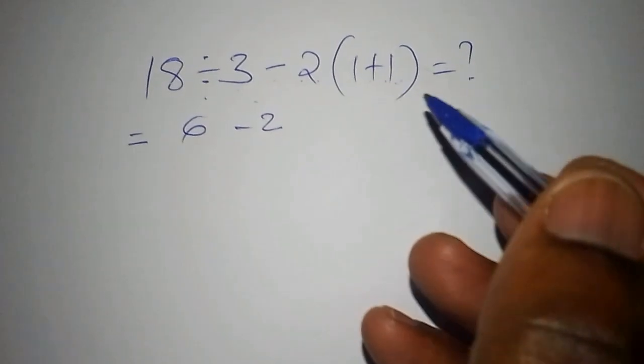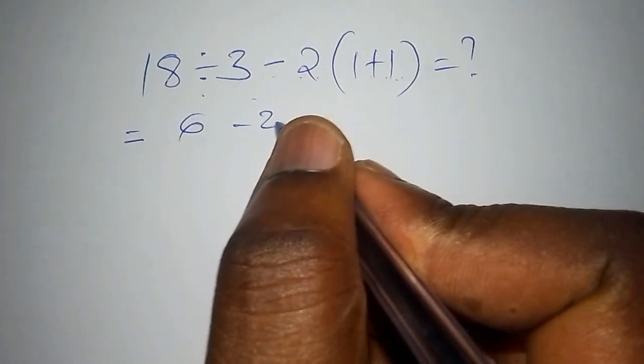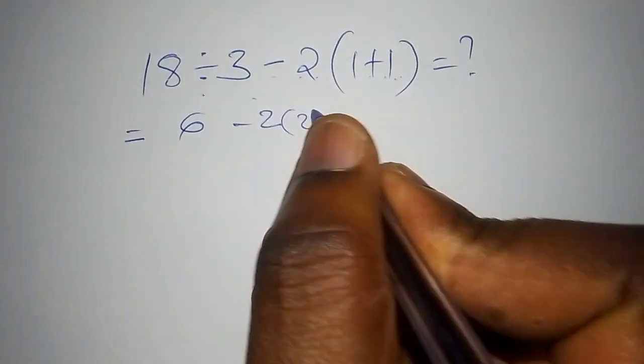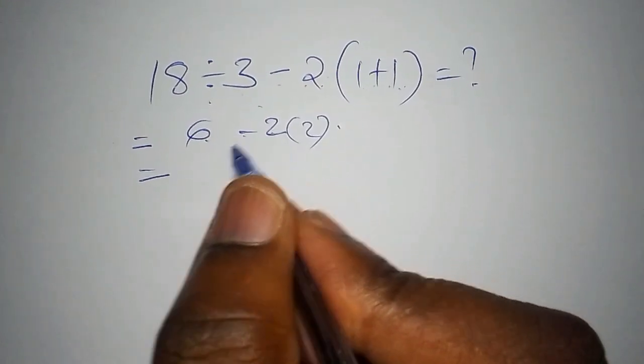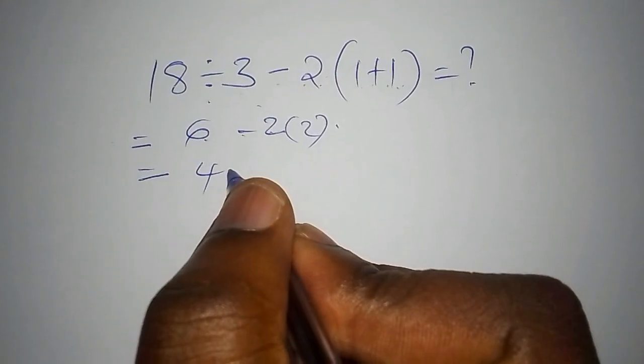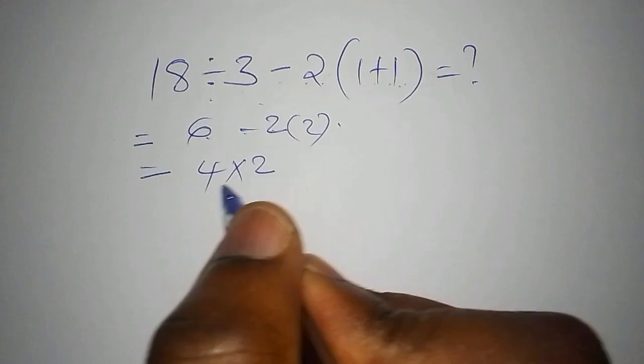Then from there you say that 1 plus 1 is 2. Then you say 2 into bracket 2. Then from there you say that 6 minus 2 is 4, then 4 multiplied by 2. Then the answer is 8.